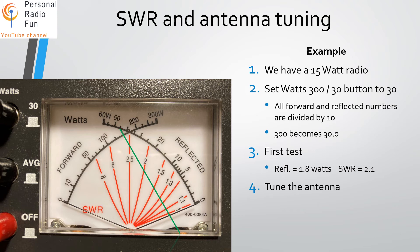To improve the SWR, we tune the antenna and run the test again. On the second test, the reflected power has come way down. The needle is about two and a half tick marks up from zero — the first number after zero is 5, but divide by 10, so it's 0.5. The reflected power is actually 0.25 watts. Where the needles cross is just a hair above an SWR of 1.3, which is very good. You want to keep it below 1.5.